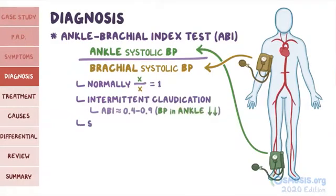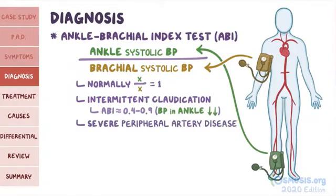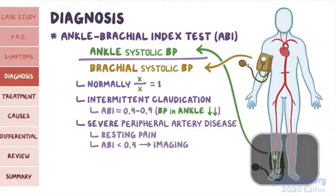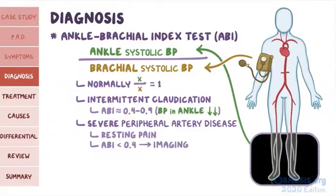In severe peripheral artery disease, usually when the individual begins to develop resting pain, the ABI is less than 0.4. After doing the ABI, the diagnosis is further confirmed with imaging, such as ultrasound or CT angiography.